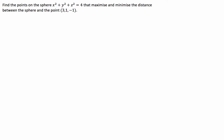G'day guys, we've got an optimisation question today where we've got to find the points on the sphere x squared plus y squared plus z squared equals 4 that maximise and minimise the distance between the sphere and the point (3, 1, -1).